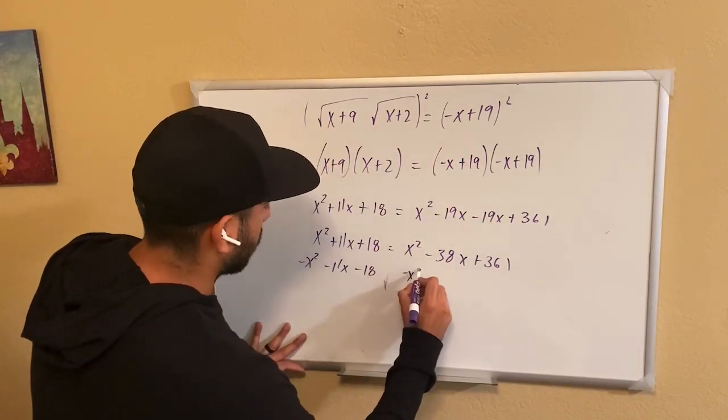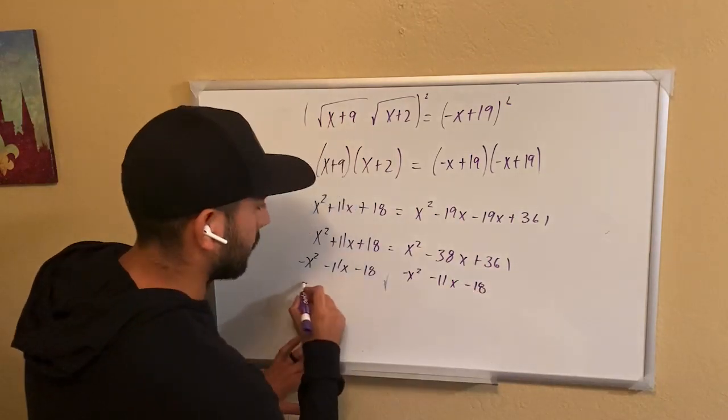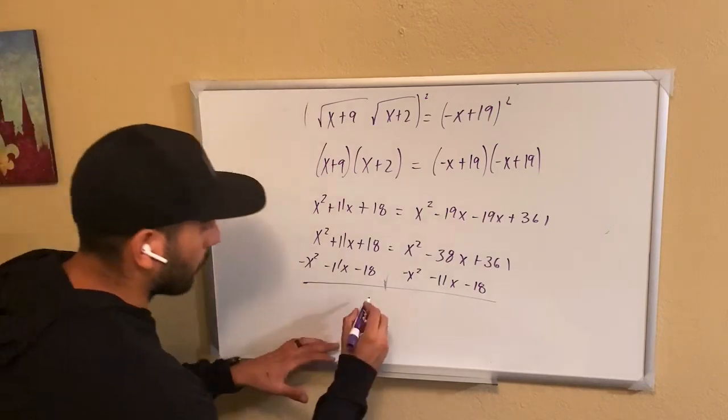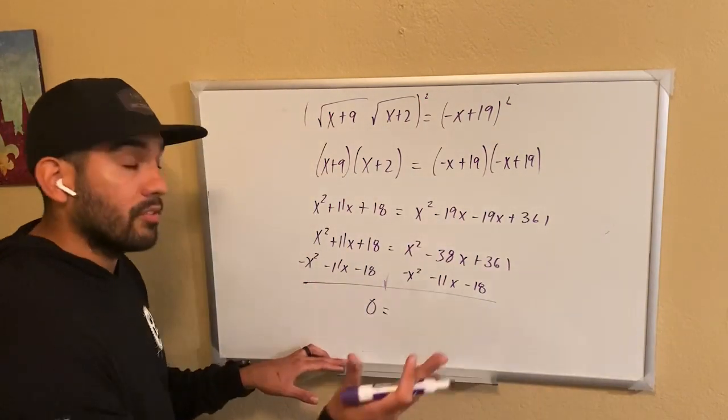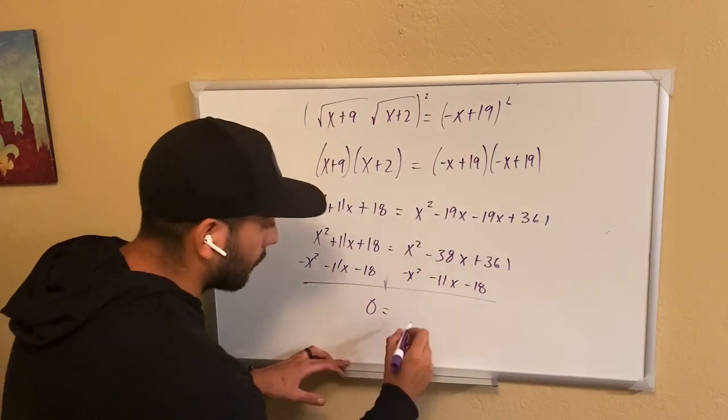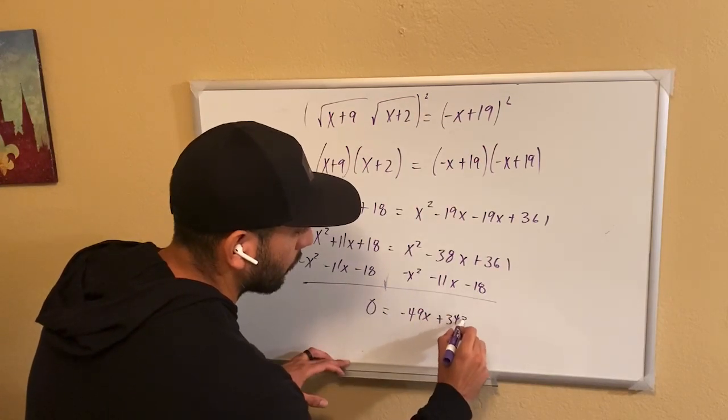So I can find another x squared minus 11x minus 18. Nice. Okay, these values are going to cancel out, which is great. It's what I wanted. So I get 0 is equal to x squared minus x squared cancels out. It's actually really nice. That helps us a lot. Negative 38x minus 11x, negative 49x, and then this becomes positive 343.